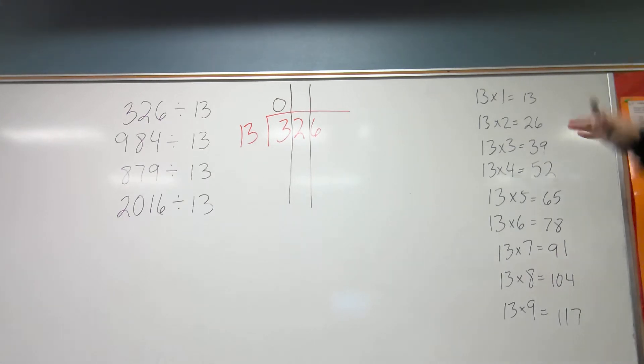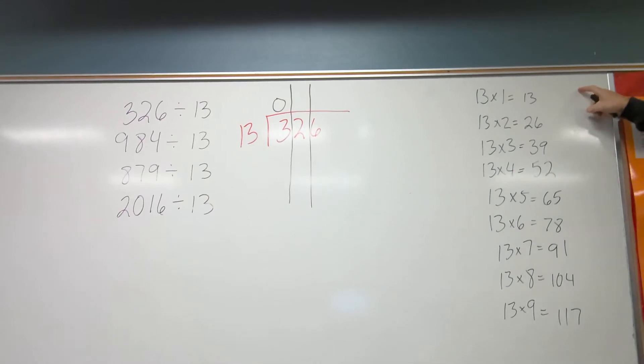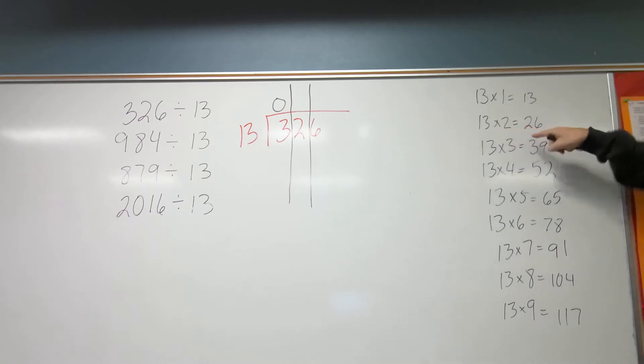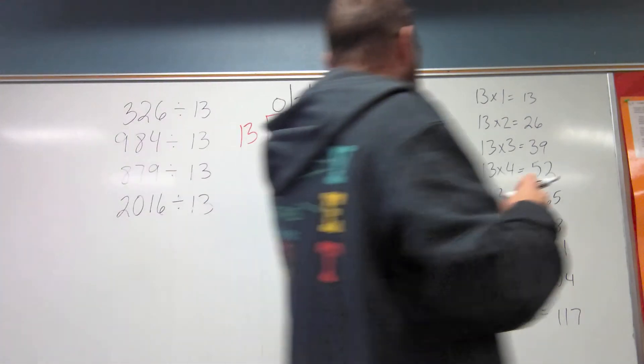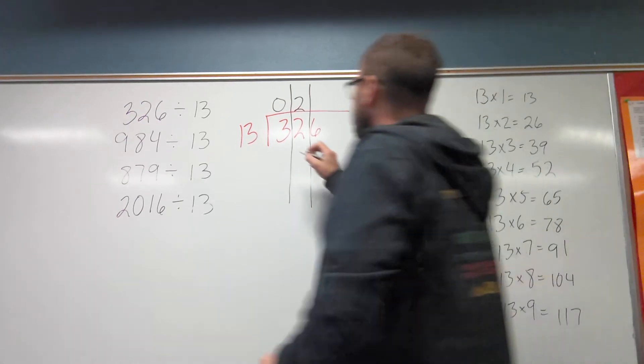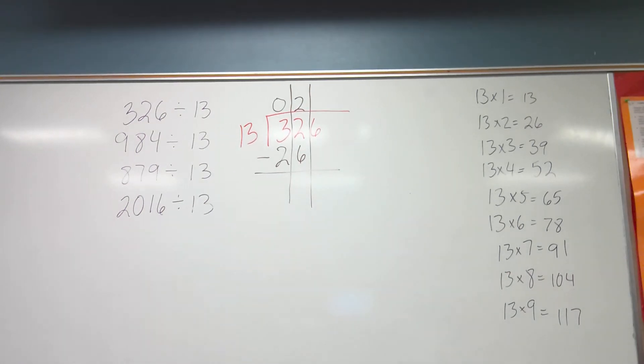So if I look up here, I have 0 hundreds in my quotient. Now I look, will 13 go into 32? My answer is yes. So now I look over the hardest part I did, multiplying by one-digit factors, and I look at my products, and I get as close to 32 as I can without going over. The closest I can get is 26. And 13 times 2 is 26.